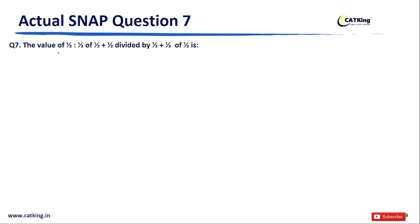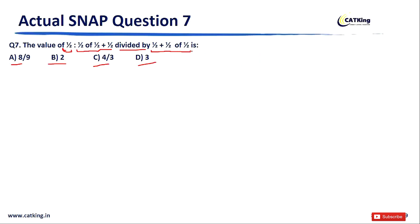Question number 7: What is the value of [1/2 : (1/2 of 1/2 + 1/2)] divided by [1/2 + 1/2 of 1/2]? Option A: 8/9, option B: 2, option C: 4/3, option D: 3. This is a simple question based on the concept of ratio — apply the BODMAS rule. Try to solve this on your own first.